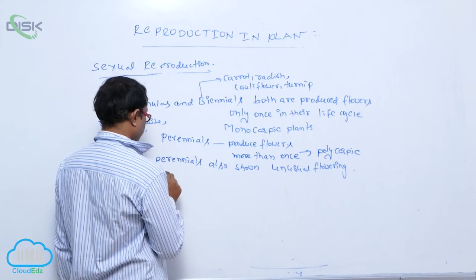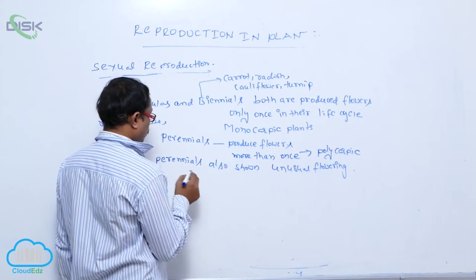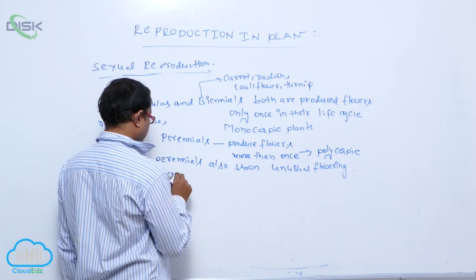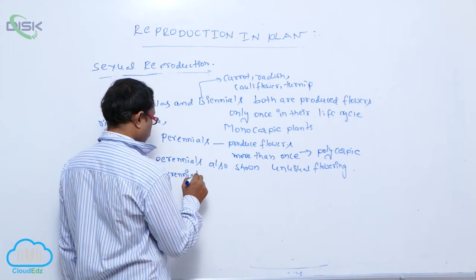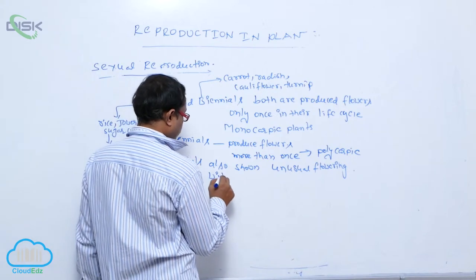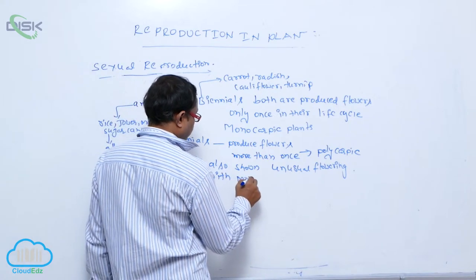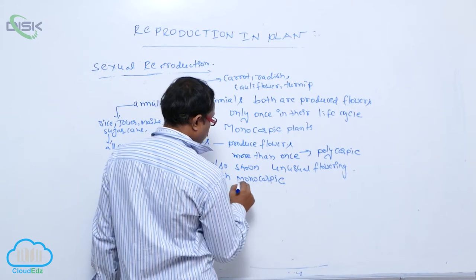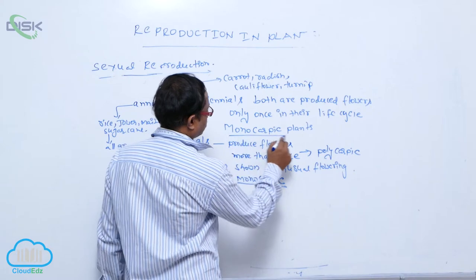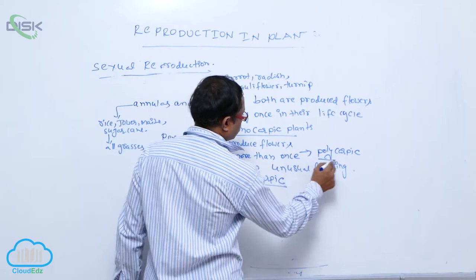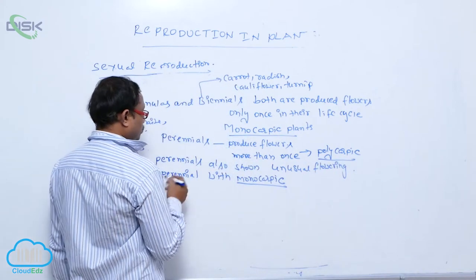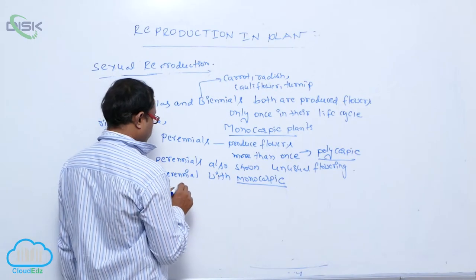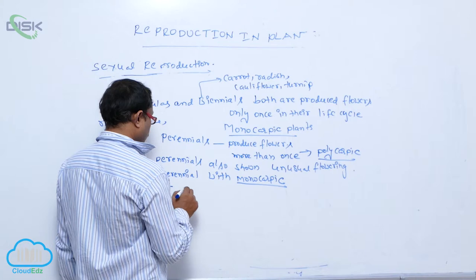The first one is bamboo. Perennial with monocarpic. It means they are producing flowers only once in their life cycle. Perennials also show unusual flowering. Perennials with monocarpic. Example, bamboo.